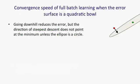If we look at the convergence speed when we do full-batch learning, when the error surface is a quadratic bowl, the obvious thing to do is go downhill. This will reduce the error. But the problem is that the direction of steepest descent does not point to the place we want to go to.